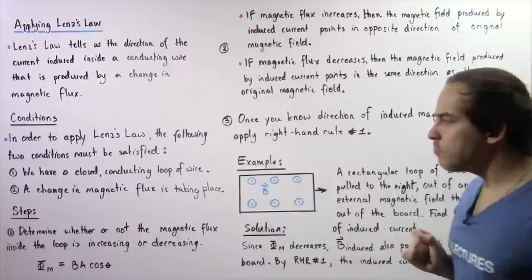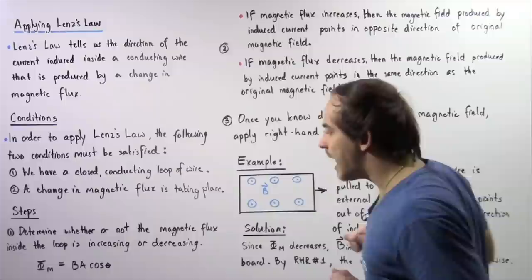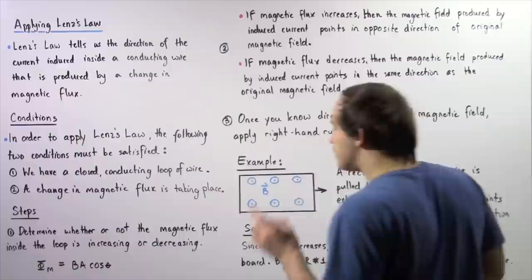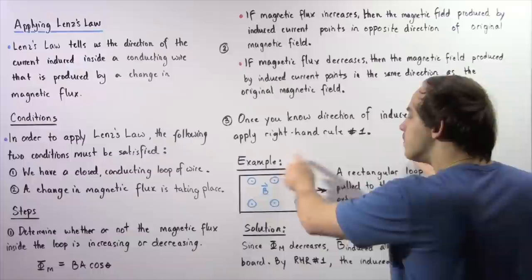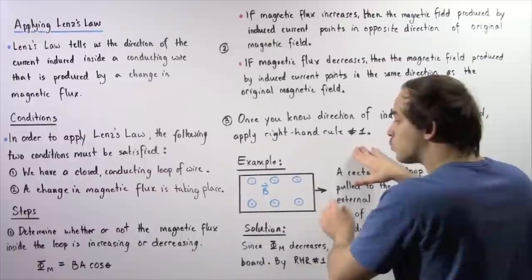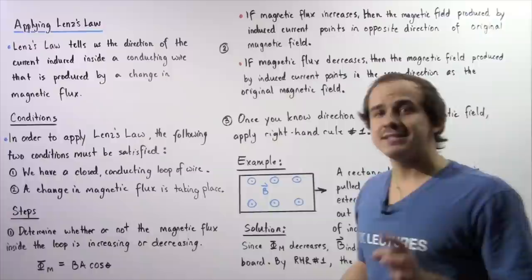Step one: is the magnetic flux increasing or decreasing? The external field B is uniform and the angle theta is constant — the loop is not being twisted. The area of the loop also remains constant. However, as the loop is pulled out of the field, the number of field lines passing through it decreases, so the effective magnetic field inside the loop is decreasing. Therefore, the magnetic flux is decreasing.